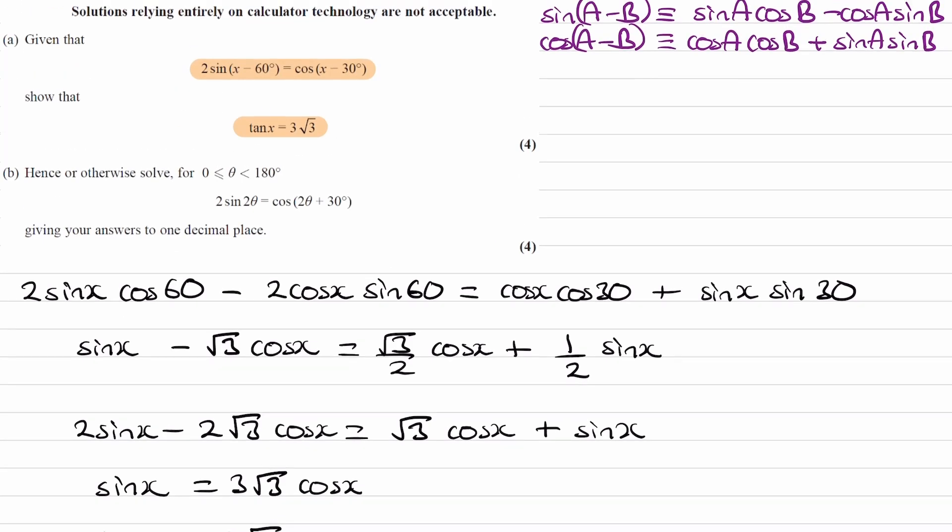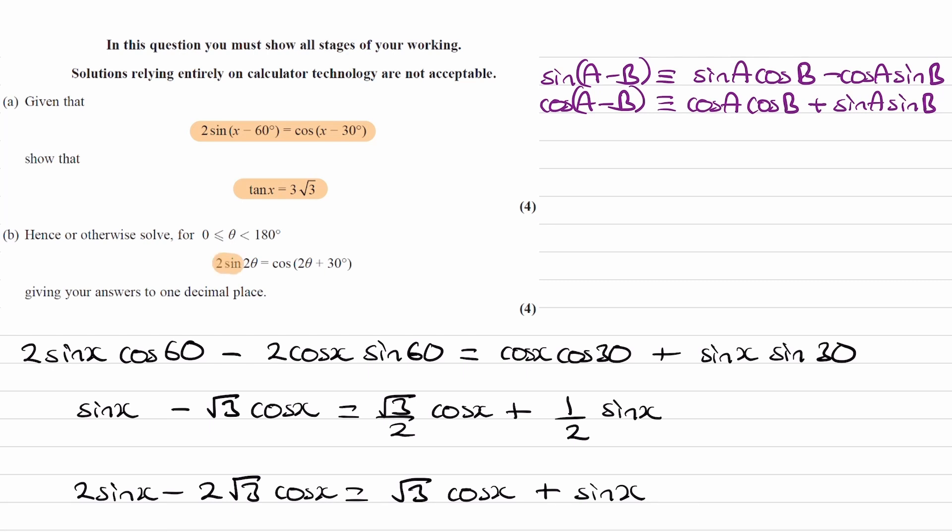And then for part b. Hence or otherwise, solve this equation in this interval. Give our answers to 1 decimal place. So the two equations that we have, this one and this one, they're quite similar. We have 2 sin, 2 sin, cos, cos. But the interiors are different.